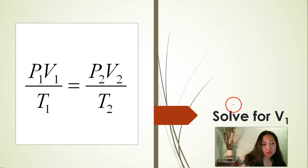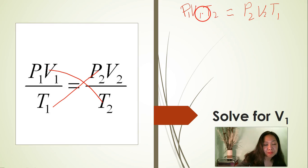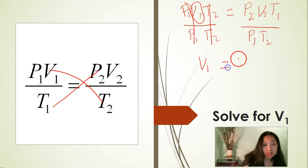Solve for V1. First step: cross multiply to get rid of the denominator. P1 times V1 times T2 is equal to P2 times V2 times T1. Now solve for V1 — divide both sides of the equation by P1 times T2. Cancel P1, cancel T2. That leaves us with V1 is equal to P2 times V2 times T1 divided by P1 times T2.